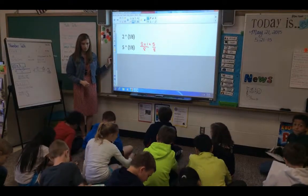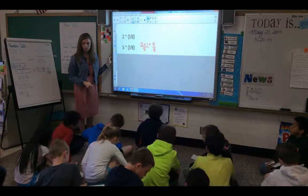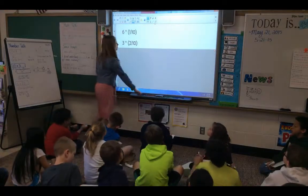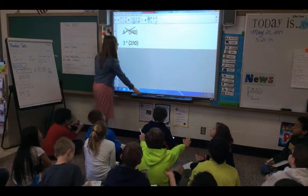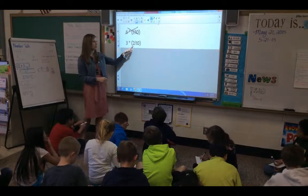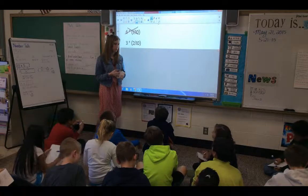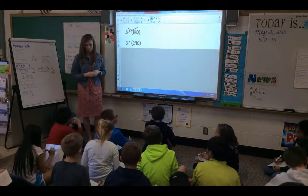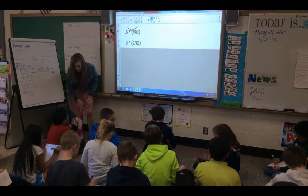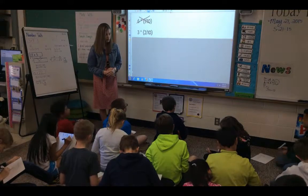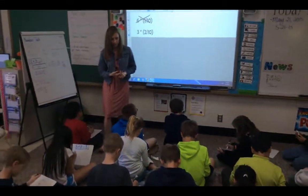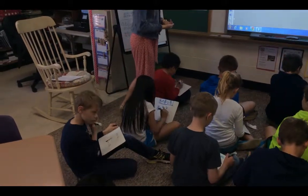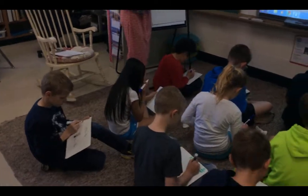Erase your boards, let's try one more. I'd like you to try three times two-tenths. This is not a unit fraction — we have two-tenths now. We've been multiplying unit fractions before: one-fourth, one-fifth, one-eighth — but now we have two in the numerator. What is three times two-tenths? Write down the problem. Let's see some repeated addition, fraction strips, and jumps on a number line.